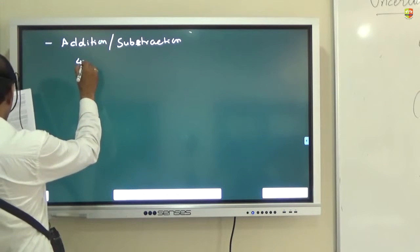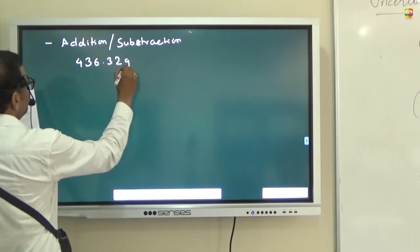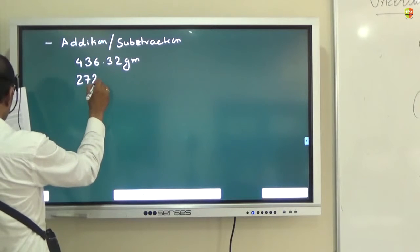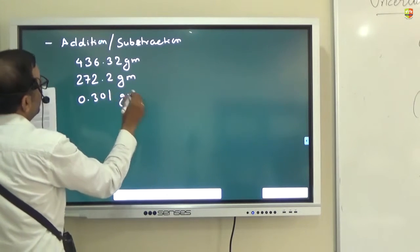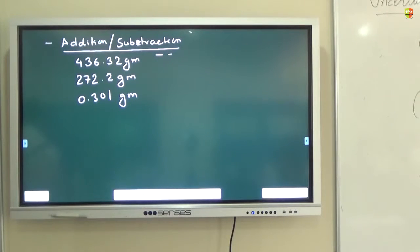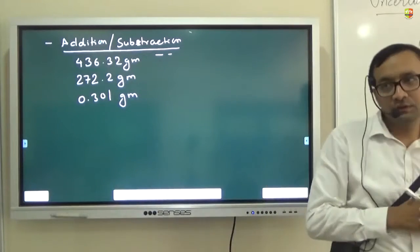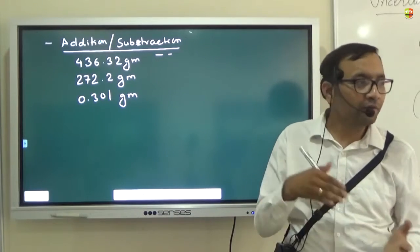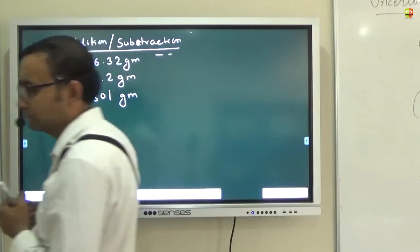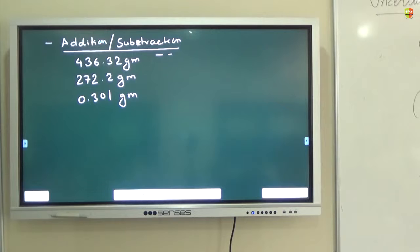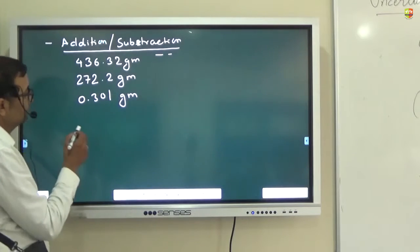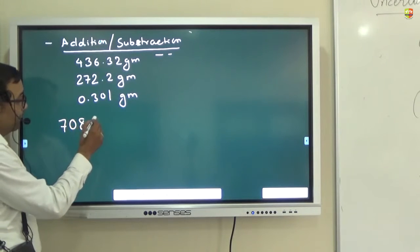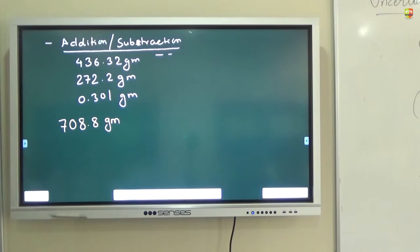Stop talking. You have 436.32 gram, 272.2 gram, and 0.301 gram. These three masses are kept on a weighing scale. So how much should be the reading of the weighing scale? 708.821. Is this what you are getting? Yes, sir. You have added them.